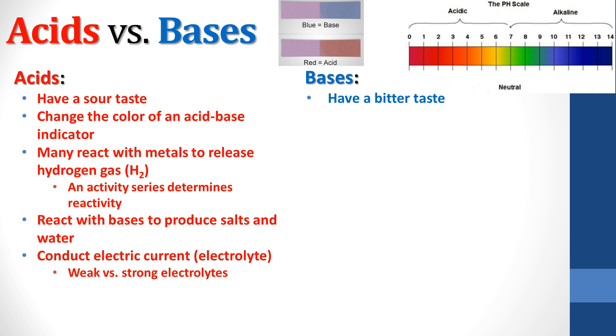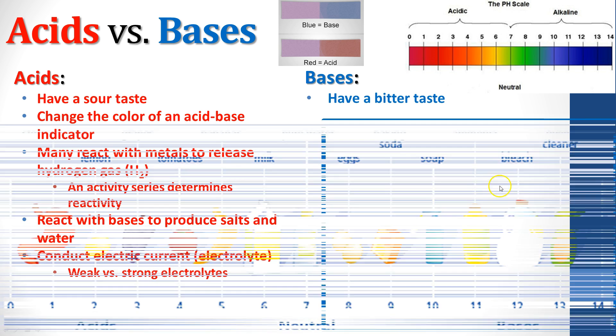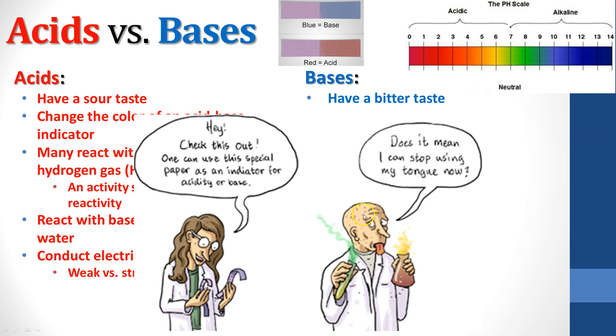Bases, on the other hand, are going to have more of a bitter taste as opposed to a sour taste. Looking back at this picture here, bases are going to be on this side of the pH scale. Eggs, baking soda, soap, ammonia, bleach, oven cleaner. Again, do not taste these. We are to the point now where you don't actually need to put stuff on your tongue. That's why we have these things to determine what's an acid and what's a base.